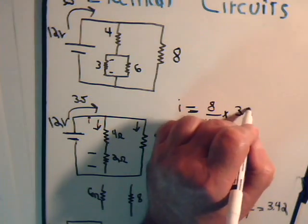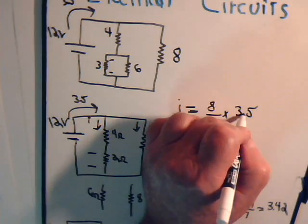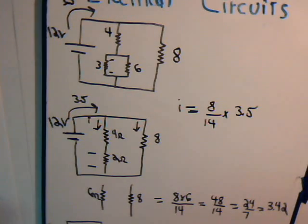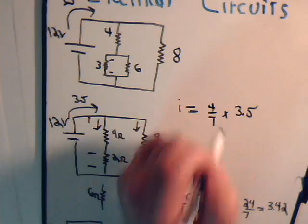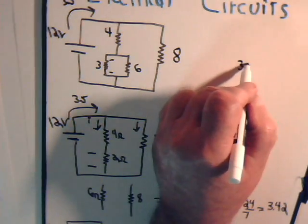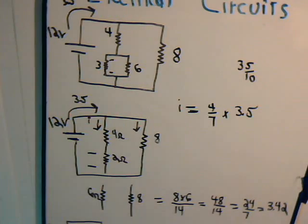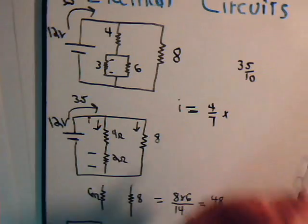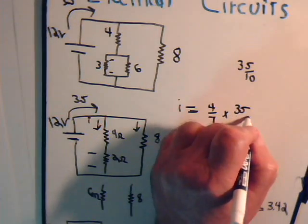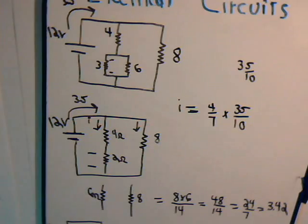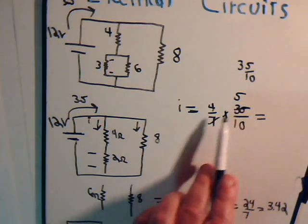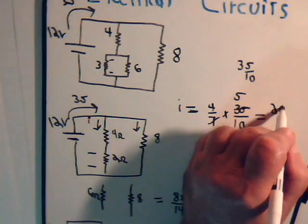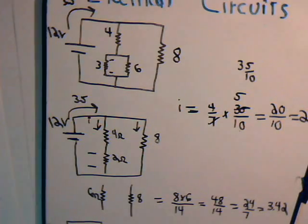Times the current being fed into the circuit. So this is 8 over 14 times 3.5, or that would be equal to 4 over 7 times 3.5, which is 35 over 10. And 7 times 5 is 35, so that equals 20 over 10, or that equals 2.